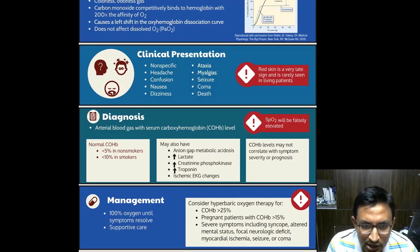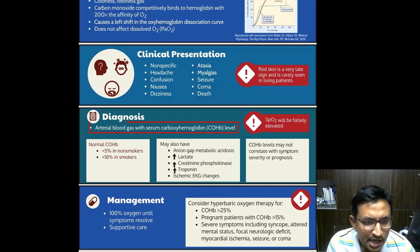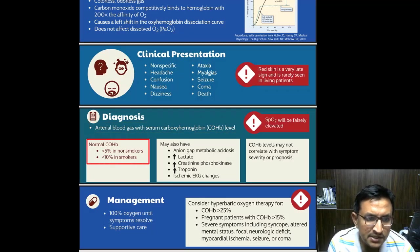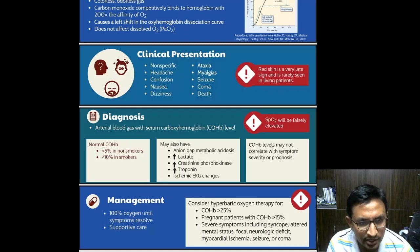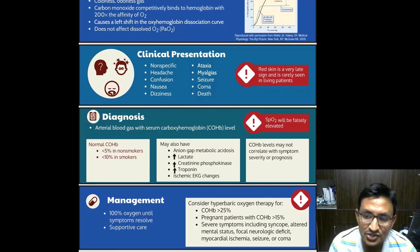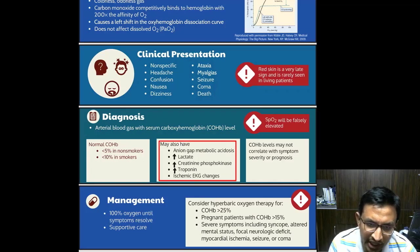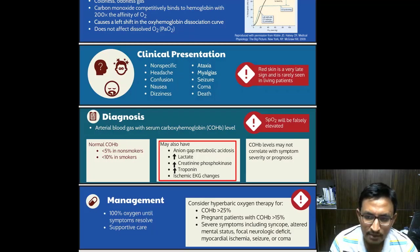Diagnosis of carbon monoxide poisoning involves measuring the levels of carboxyhemoglobin in the blood. Normal levels are typically less than 5% in non-smokers and less than 10% in smokers. Diagnosis can be complicated because carboxyhemoglobin levels may not always correlate with the severity of symptoms or the prognosis. Additional diagnostic findings such as elevated lactate levels — which indicate tissue hypoxia — and other markers of tissue damage are also used.